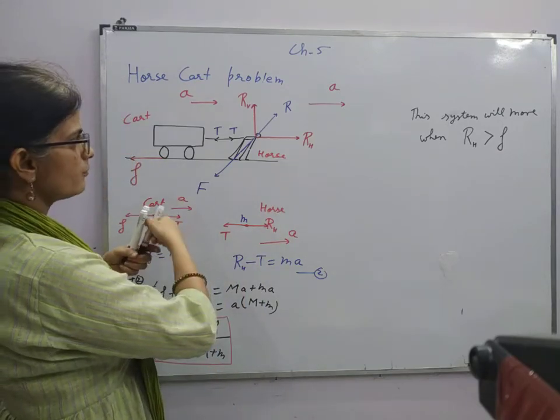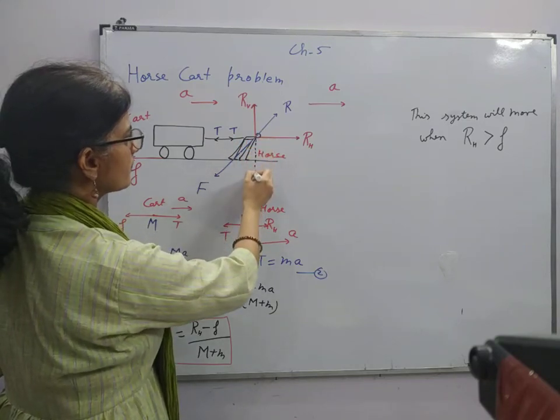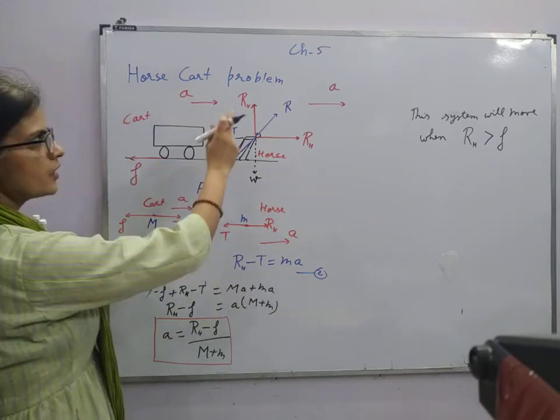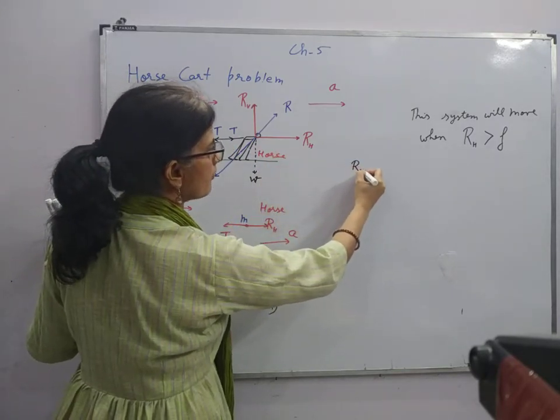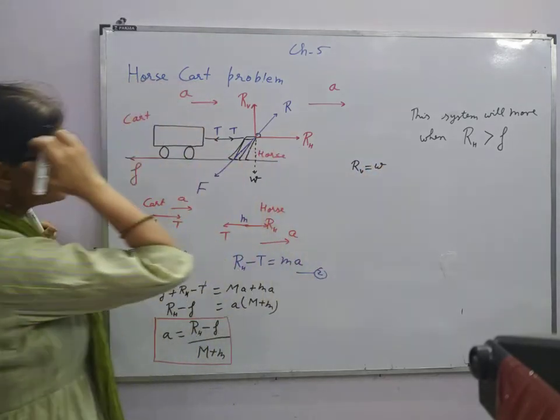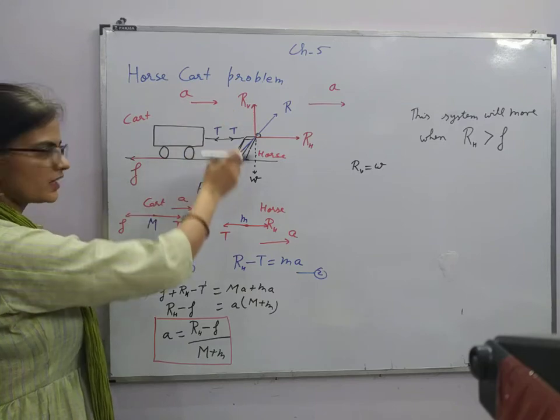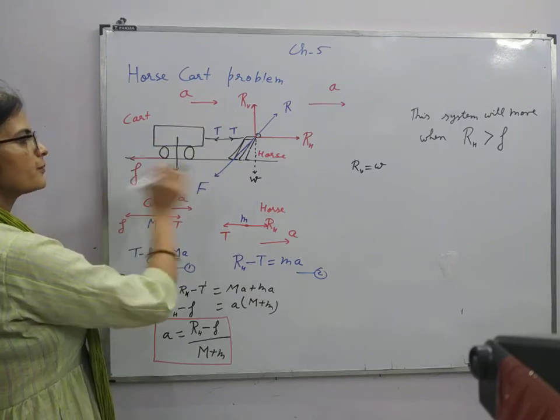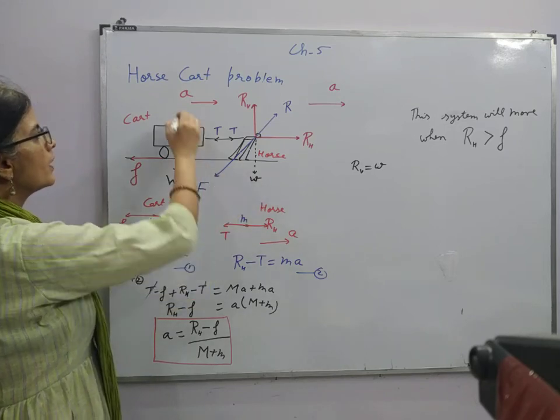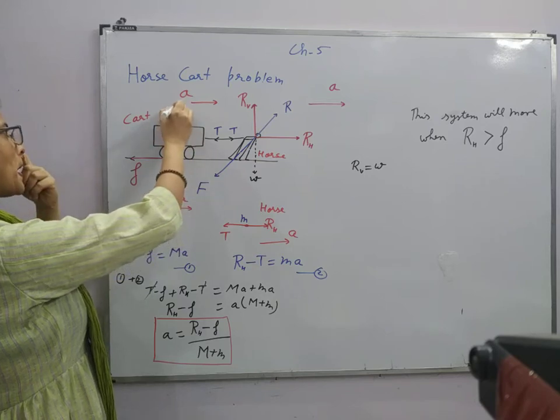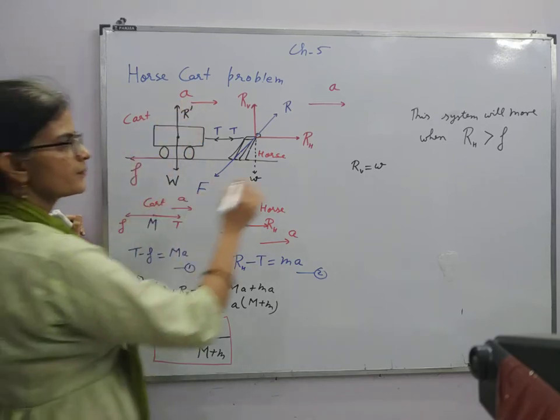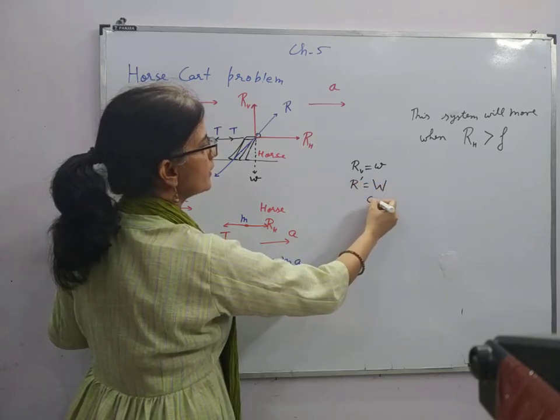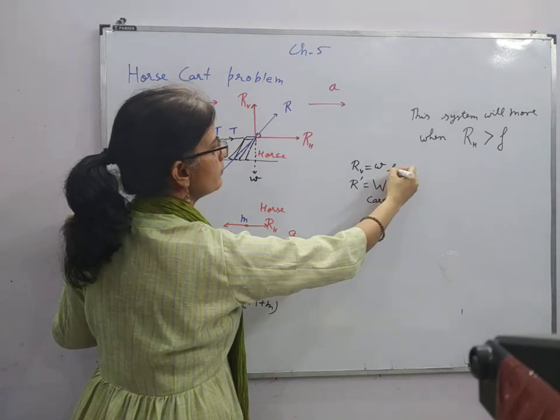Now there is no vertical motion. So the vertical component of this weight of the horse will balance the weight of the horse. Vertical component will balance the weight of the horse. Weight of the cart is capital W suppose. Then this normal reaction of the cart will balance the weight of the cart. And this is horse.